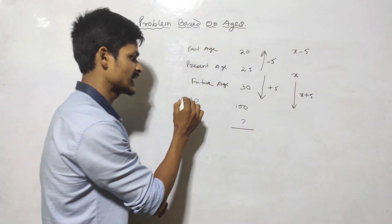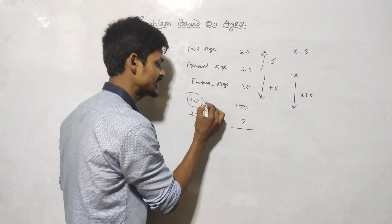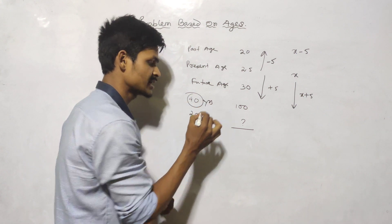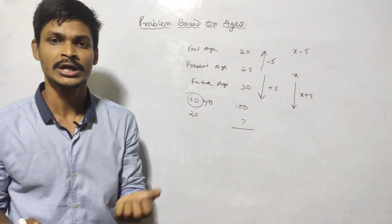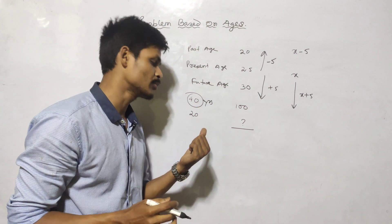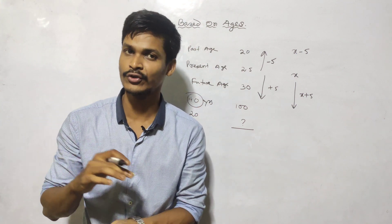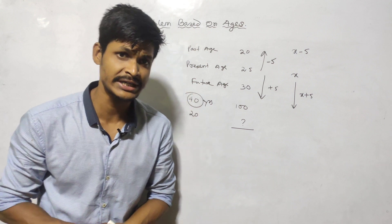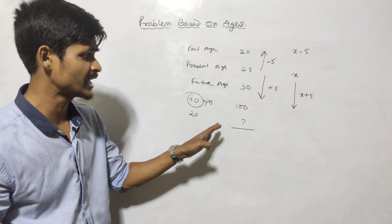Present age is 40 years. If we say 20 years — there is 40, and now it is half of 40, then it is 20 years.